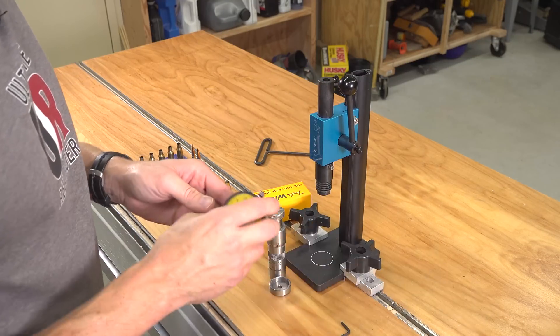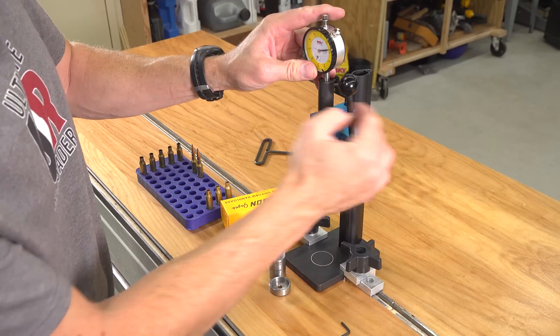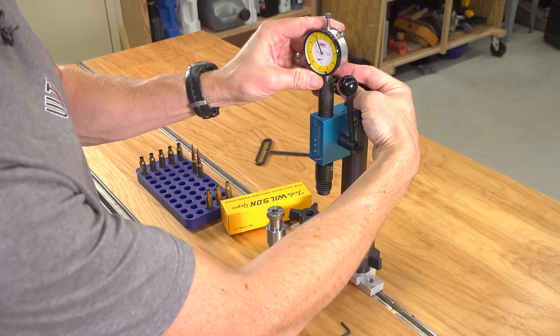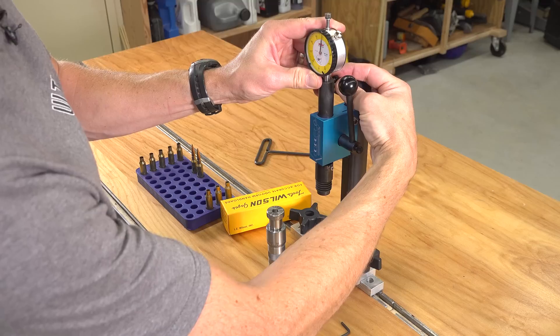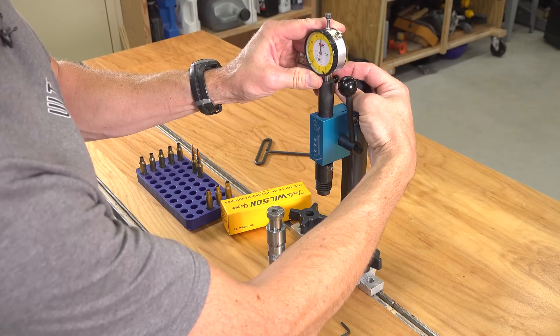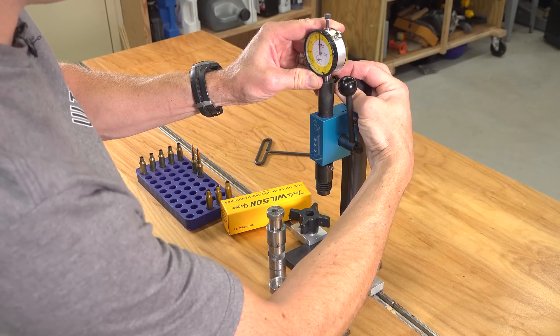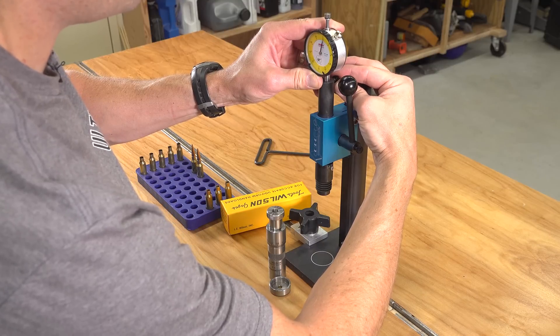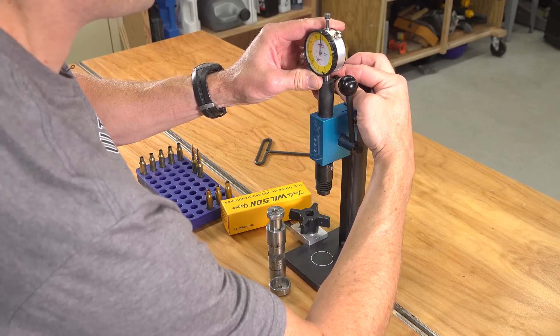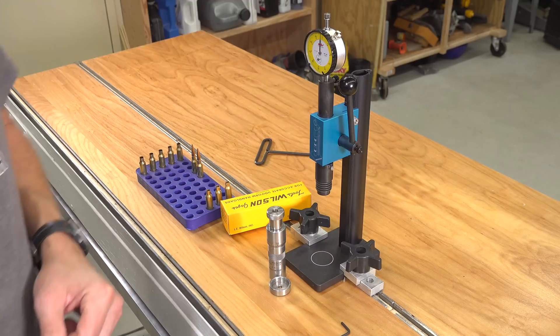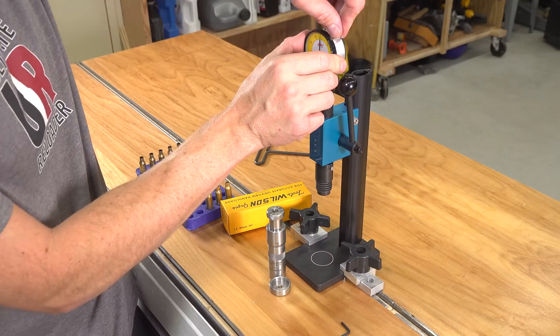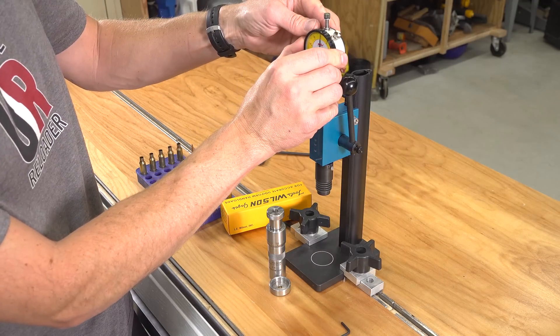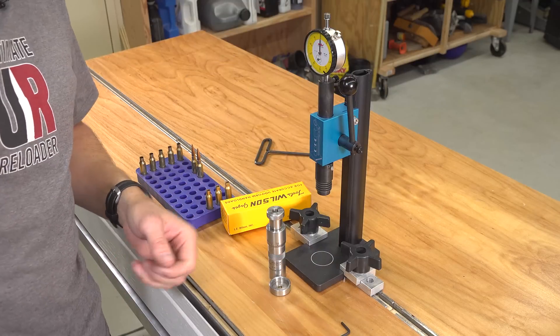Now on the top side we're going to need to insert the dial indicator and I'm going to just kind of roughly have it pointing to the top there. There's a set screw that's included with the K&M press. There we go. That looks pretty good. Now I can zero things out. There we go. We're on zero.